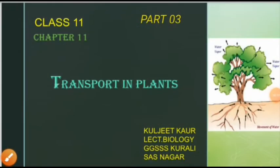Let's continue Transport in Plants. In the previous lectures we studied about different types of transport, like passive transport — diffusion and facilitated diffusion — which does not depend upon energy and in which transport takes place along the concentration gradient, meaning from high concentration to low concentration. Then we studied about active transport, also known as uphill transport, because in this the movement occurs from low concentration to high concentration, that is against the gradient, and this process needs energy.